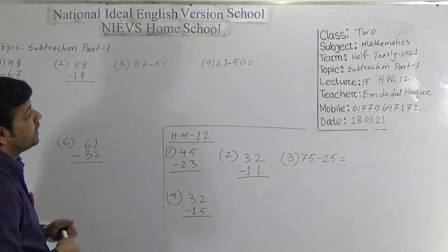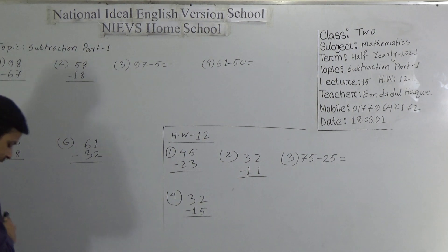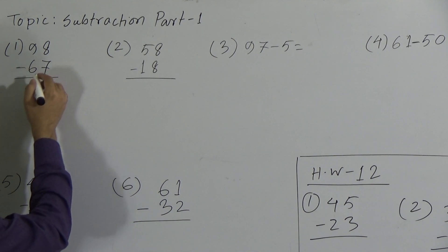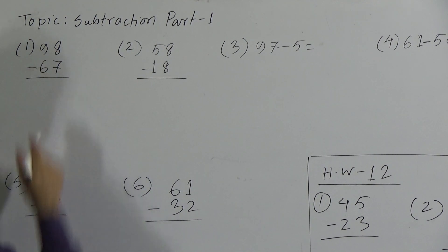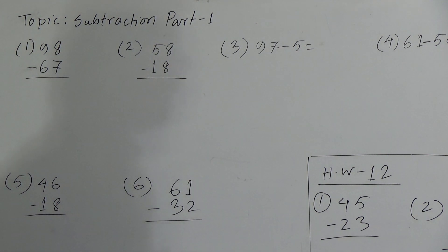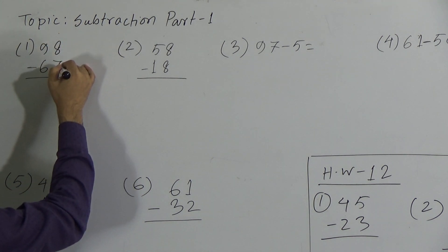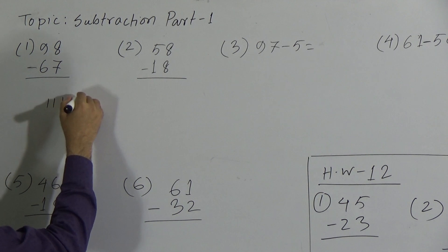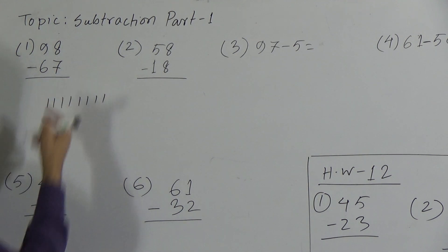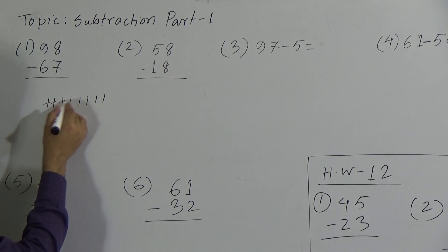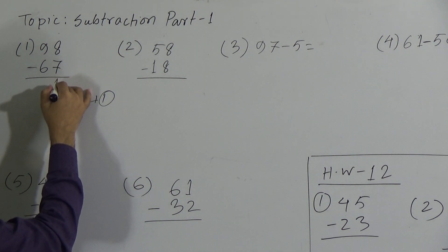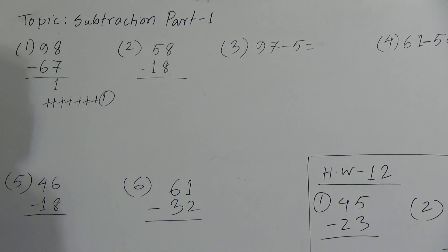These 6 questions I will solve in today's class, and 4 questions are given for your homework. Let us see the first question. As students in class 1 you have learned how to do subtraction — we have to subtract the second number from the first number. We have to start from the right, which means from the unit place. The unit place here is 8 and the unit place of the second number is 7. We subtract 7 from 8 using 8 sticks: 1, 2, 3, 4, 5, 6, 7, 8. After subtracting 7, 1 stick remains, so 8 minus 7 equals 1.